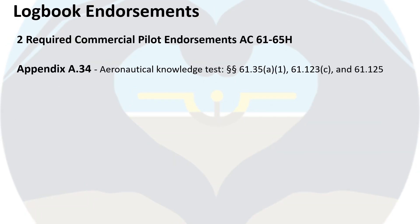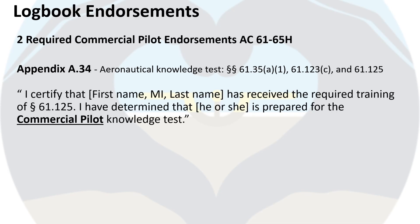Finally, I want to cover the logbook endorsements that your DPE is going to expect when you show up for your checkride. The first two are required commercial pilot endorsements and can be found in advisory circular 61-65H. The first can be found in appendix A.34, where your instructor must certify that you have demonstrated the aeronautical knowledge to take the written test according to FAR 61.35(A)(1), 61.123(C), and 61.125. Here's an example of what this endorsement would look like.